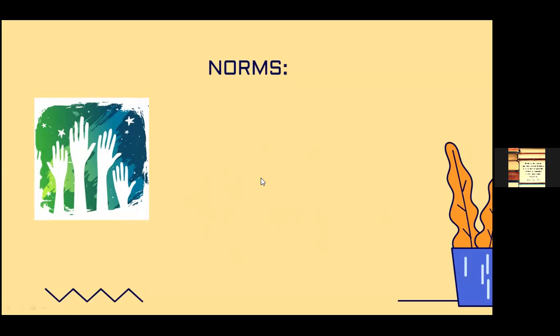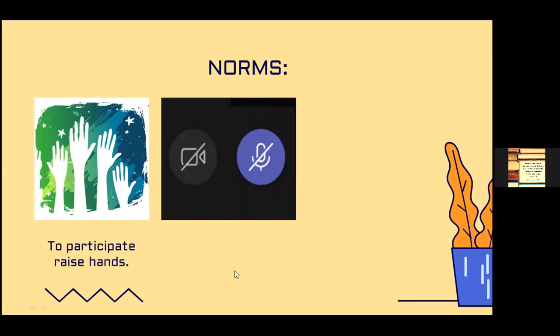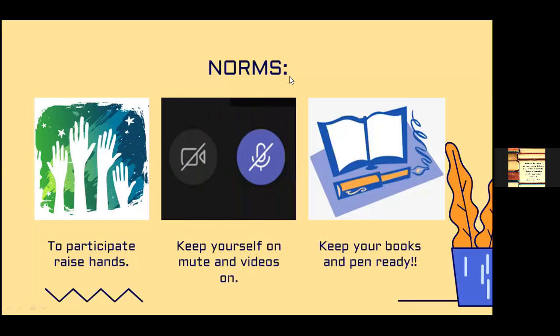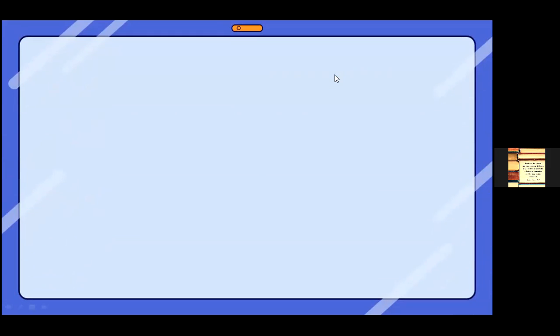Let's get the norms clear for today. The first thing that we'll be doing in Ola Classrooms is participate. If you want to come off mute to answer, please raise your hands. If you're not comfortable raising your hands and coming off mute, you all can definitely type in the chat box. The next norm is to keep yourself on mute. If possible, please turn on your videos — that would be amazing. If not, it's absolutely fine. And the last one: please keep your notebooks and pen ready so that it's easier for you to note down certain things.